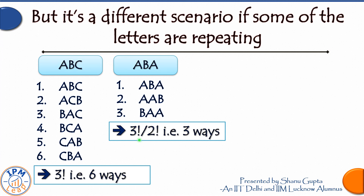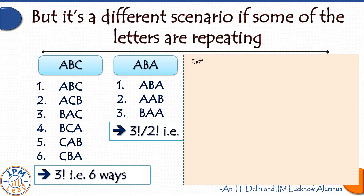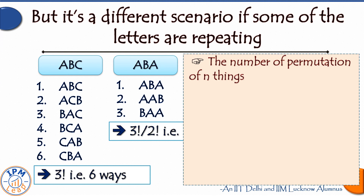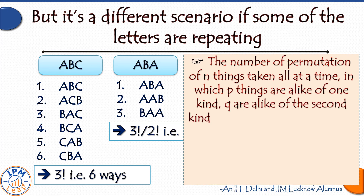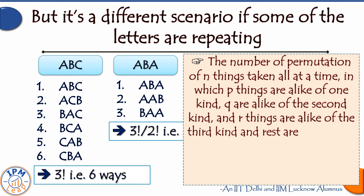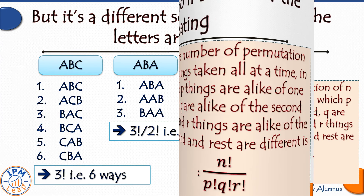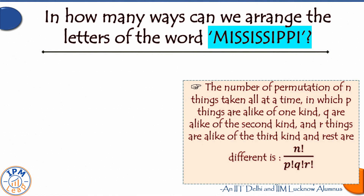In general, the number of permutations of n things taken all at a time, in which p things are alike of one kind, q are alike of the second kind, and r things are alike of the third kind, and the rest are different, is equal to n! / (p! × q! × r!).